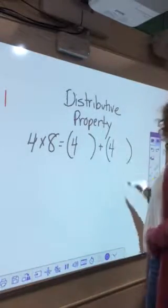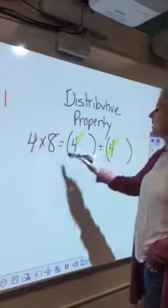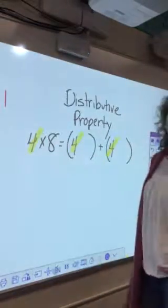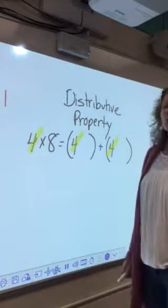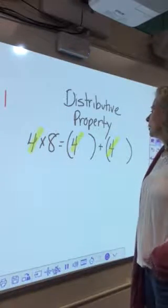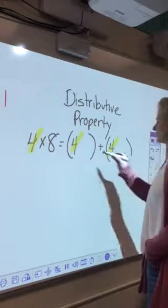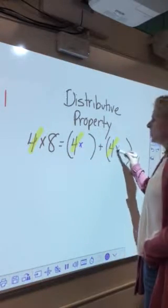Which means I'm going to break apart the number 8. Now I'm going to decide which way to break that up in order to make it easiest for me to do the math. When I break 8 up, I think I'm going to do 3 and 5.